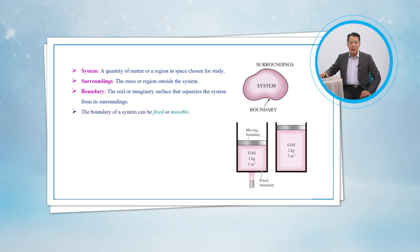The boundary of a system can be fixed or movable. Note that the boundary is the contact surface shared by both the system and the surroundings. Mathematically speaking, the boundary has zero thickness and thus it can neither contain any mass nor occupy any volume in space.